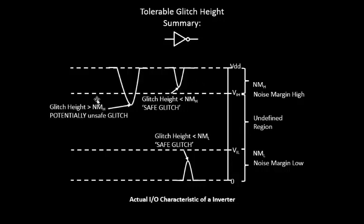Next we had this particular glitch whose glitch height was greater than 20% of VDD. 20% is just an example, so the glitch height was greater than 20% of VDD, that is nothing but NMH, that is noise margin high.